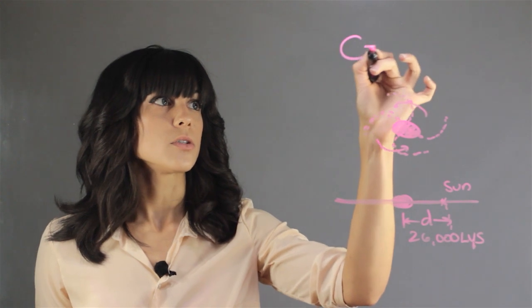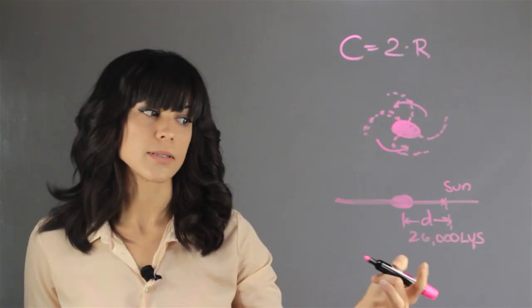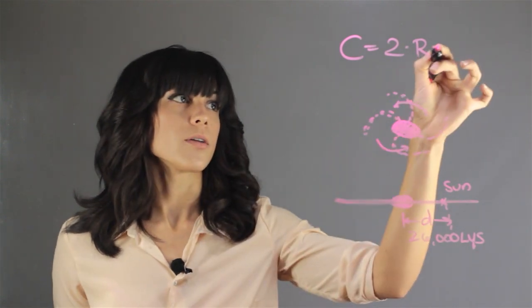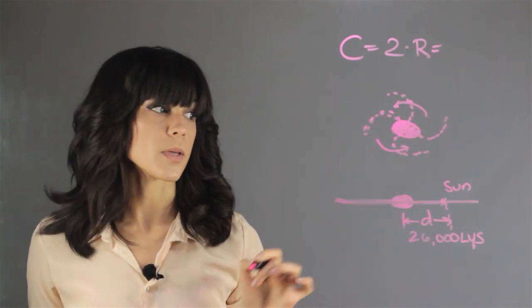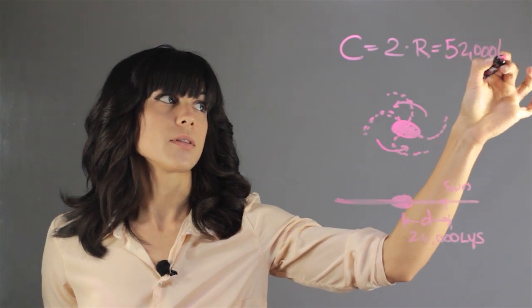The circumference is two times the radius, or two times this distance. Therefore, the circumference of the Sun's orbit is 52,000 light years.